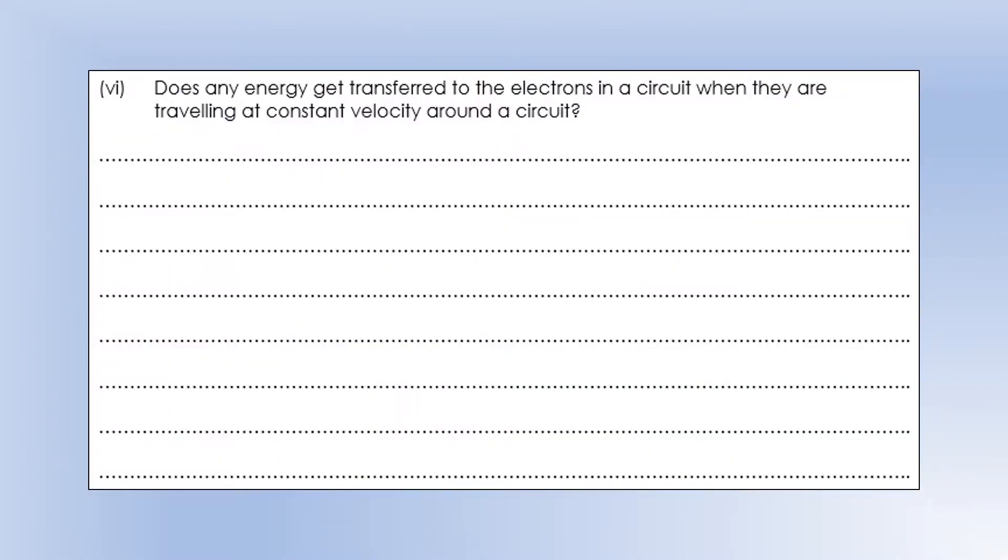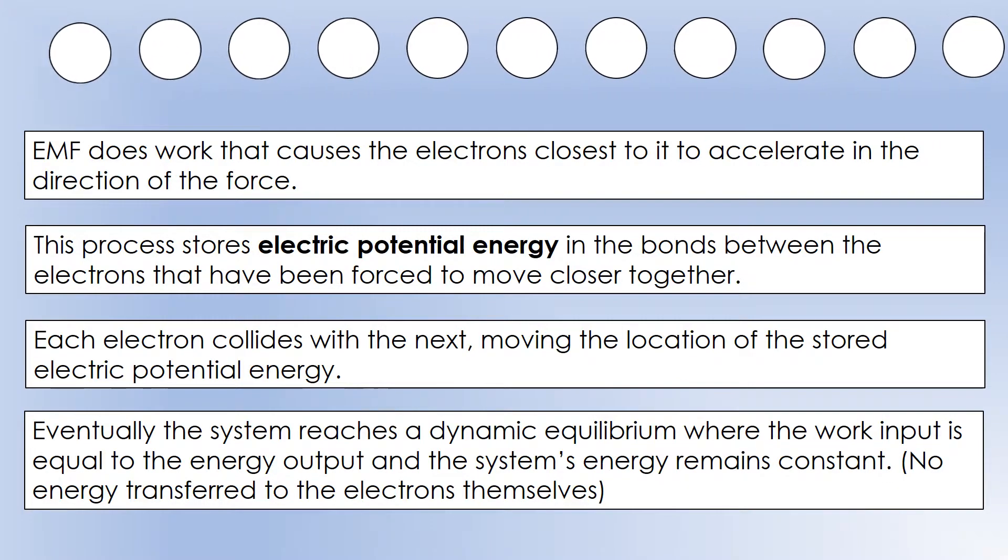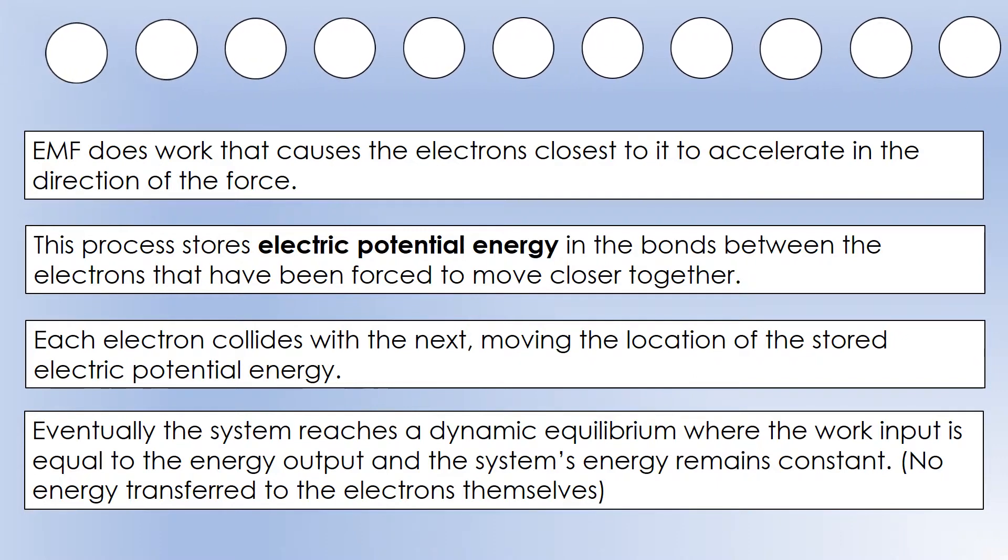So then, moving on to the next question. Does any energy get transferred to the electrons in a circuit when they're traveling around at constant velocity? Well, we can think of this exactly the same way. Initially, in the first fractions of a second, yes, we do.